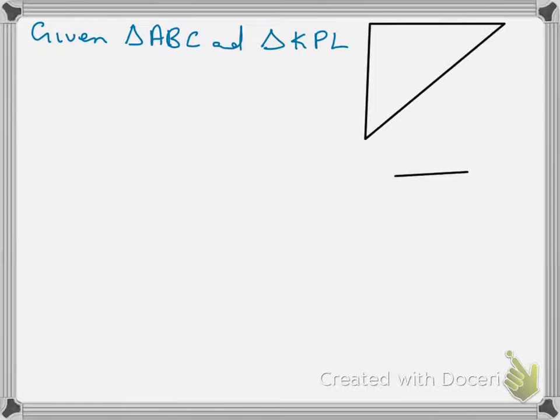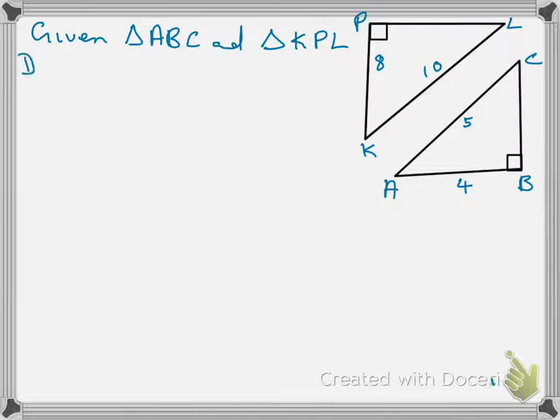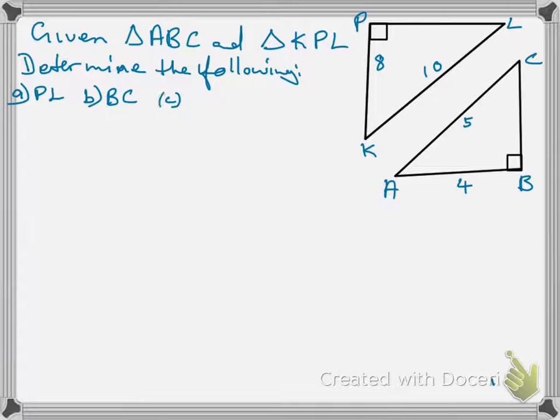Now, let's look at another example. In this example, you are given triangle ABC and triangle KPL, and then they ask you a question, determine the following: determine the side PL, determine the side BC, and determine the cos of A and cos of K. So, we need to work out those questions given there.